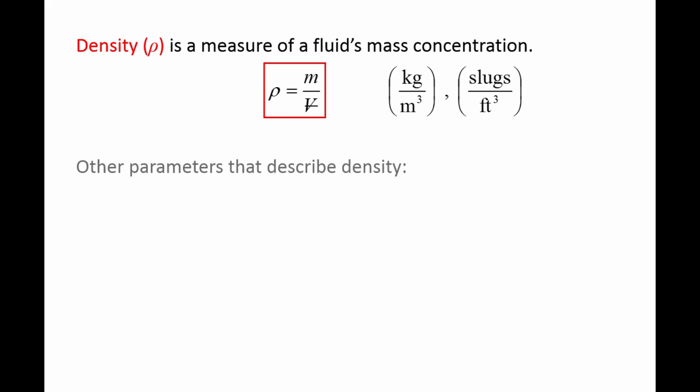There are two other parameters related to density that are commonly used in fluid mechanics. The specific weight, denoted by the Greek letter gamma, is the density times the gravitational acceleration g. It represents the weight concentration of a fluid, and its units are weight per volume.